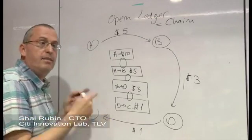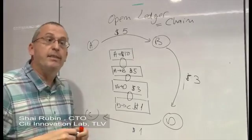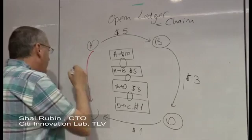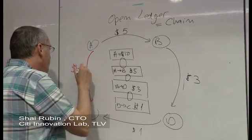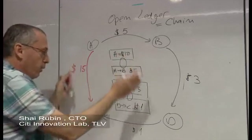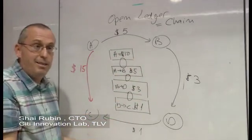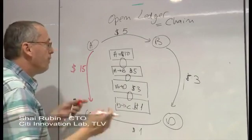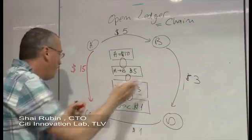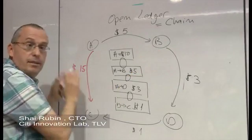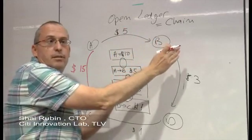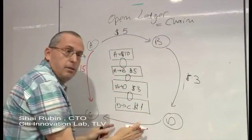And second, everyone can decide whether a transaction is valid or not valid. For example, if A now attempts to move $15 to C, everyone on the network can immediately see that this is not a valid transaction. Because A started with 10, moved out to B another 5, A does not have $15, and this transaction will not be added to the open ledger. This transaction will not be part of the chain.